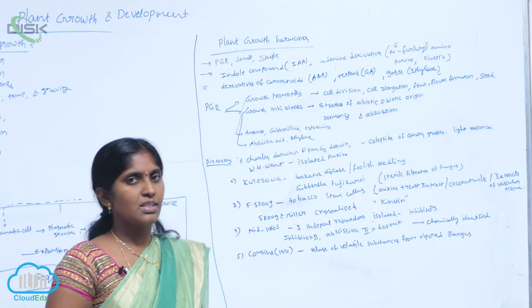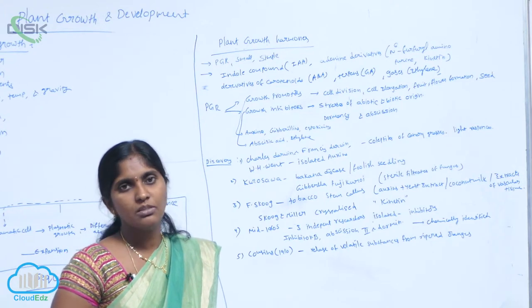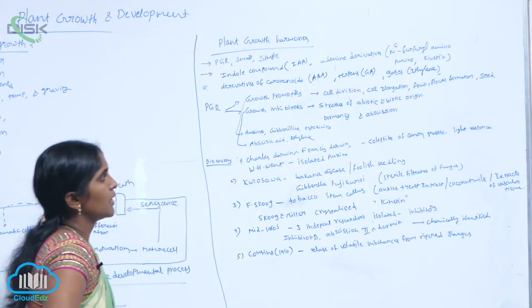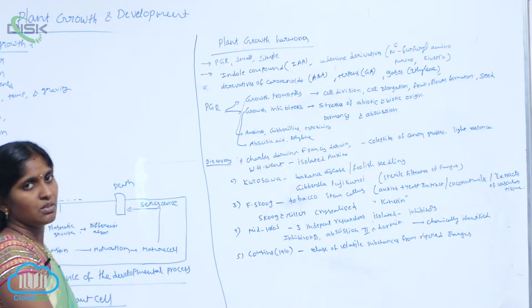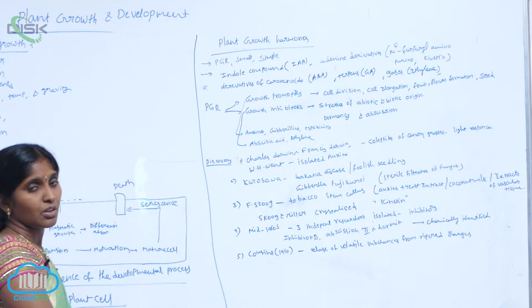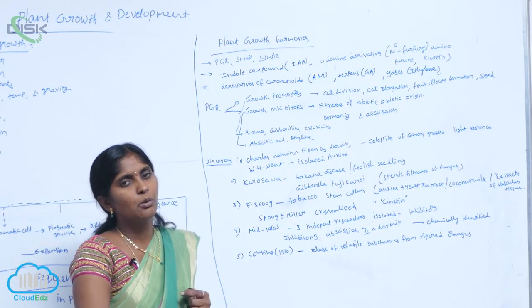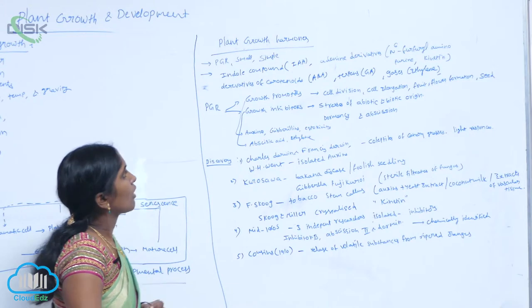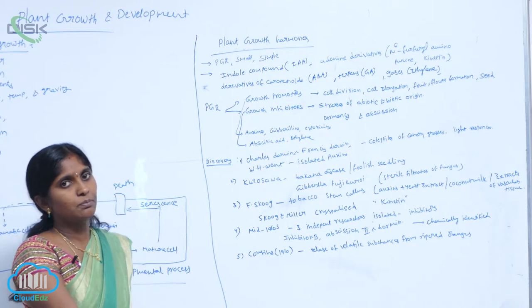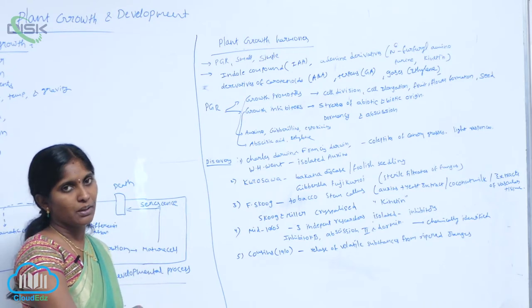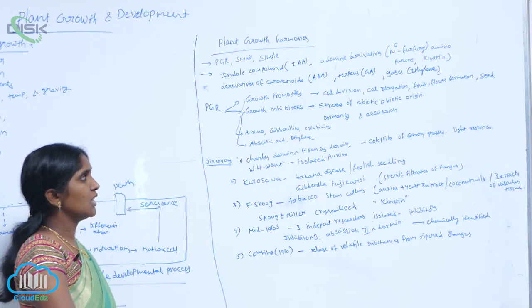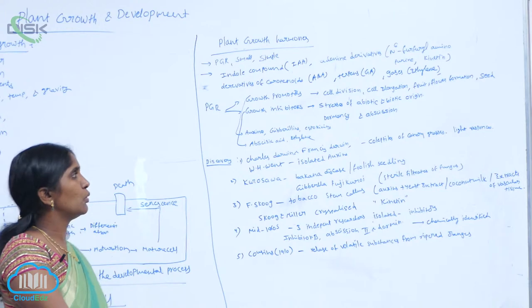When you take cell-wise, growth is cell division, cell elongation, cell maturation, fruits formation, flowers formation, seed formation, tropical movements. These all are included in growth promotion. Such conditions are promoted by the phytohormones, they are growth promoters. Basically, three are considered as growth promoters.